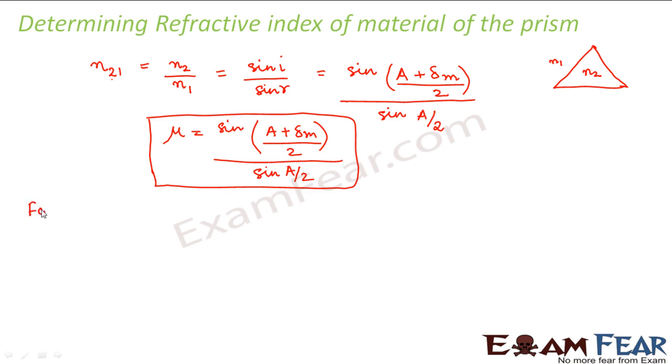Now there would be a special case for thin prisms. If the prism is thin enough in that case delta m would be very small. Now delta m is very small in that case, for example, for very small theta, sin theta is approximately equal to theta,